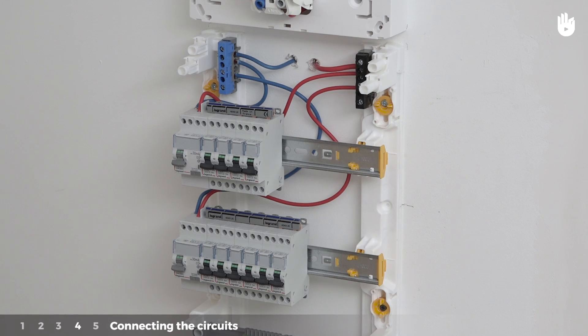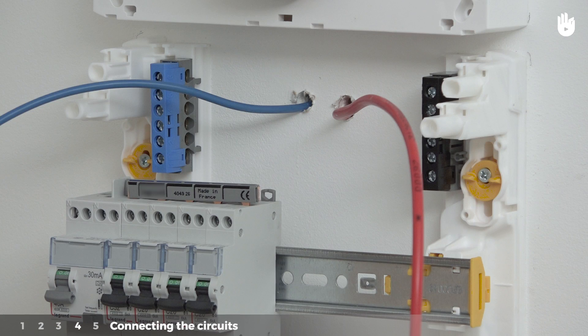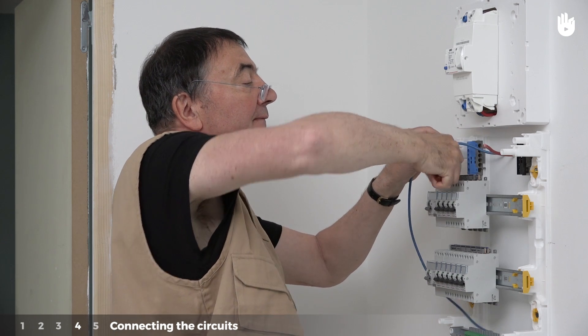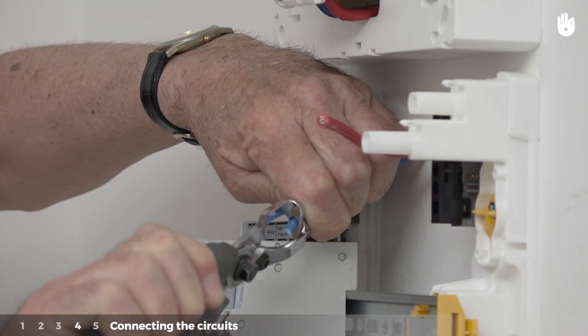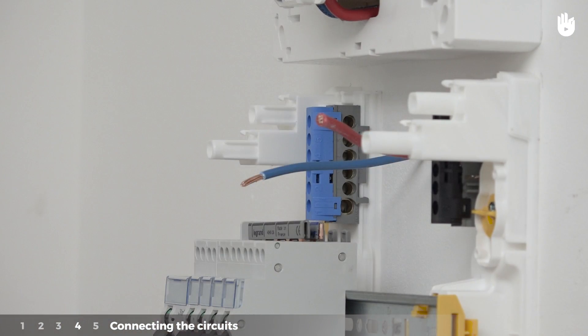Step 4. Connecting the circuits. Begin by connecting the power supply cables. Cut away any excess in the conductors. Strip the plastic covering from the electrical wires.